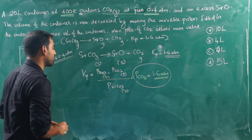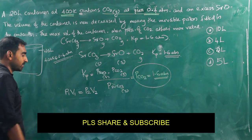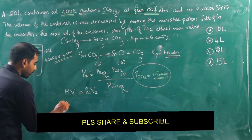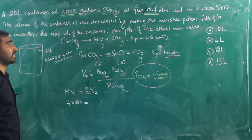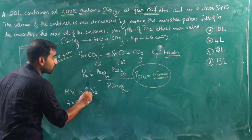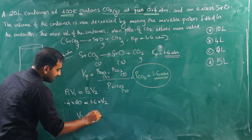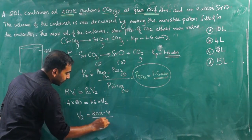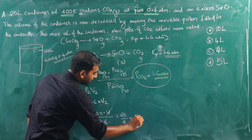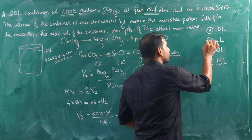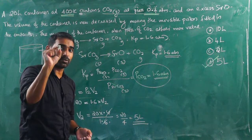Using states of matter — Boyle's Law: P₁V₁ equals P₂V₂. The first pressure is 0.4 ATM and volume is 20 liters. The maximum pressure attained is 1.6 ATM. So V₂ equals 20 × 0.4 divided by 1.6, which gives 20 divided by 4, that is 5 liters. The correct option is 5 liters.